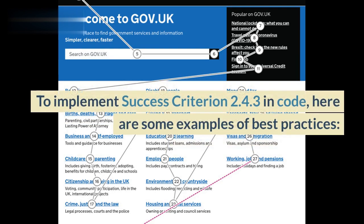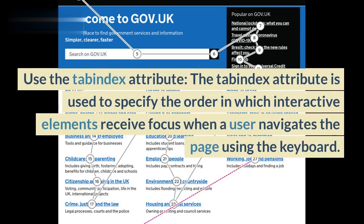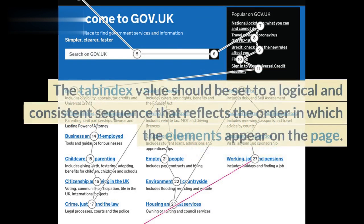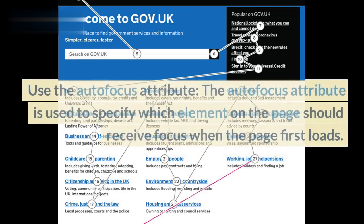To implement Success Criterion 2.4.3 in code, here are some examples of best practices. Use the Tabindex attribute. The Tabindex attribute is used to specify the order in which interactive elements receive focus when a user navigates the page using the keyboard. The Tabindex value should be set to a logical and consistent sequence that reflects the order in which the elements appear on the page.